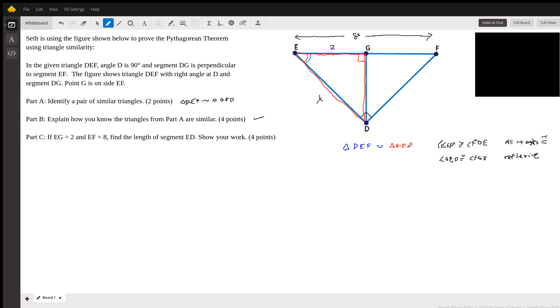We're going to prove that this big blue triangle is similar to this red triangle. So it would be triangle DEF, the big blue triangle, would be similar to the red triangle GED. And I'm going to show you how that works.